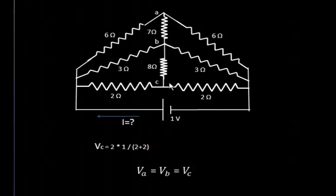Let us understand this network. What is this network? It is identical across this axis ABC. The 7 ohm and 8 ohm are connected on this axis, and the 6 ohm, 3 ohm, 2 ohm are on the right-hand side — also 6 ohm, 3 ohm and 2 ohm are on the left-hand side. So it is identical.